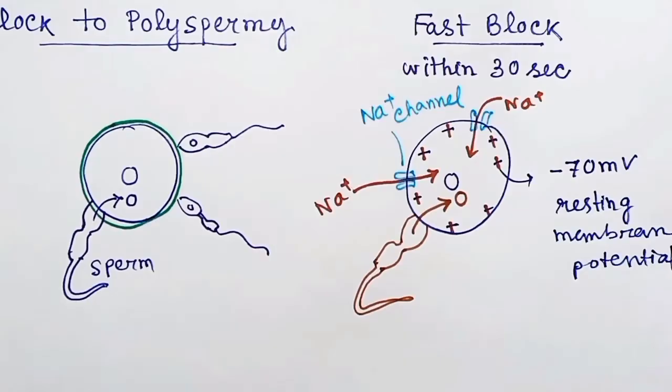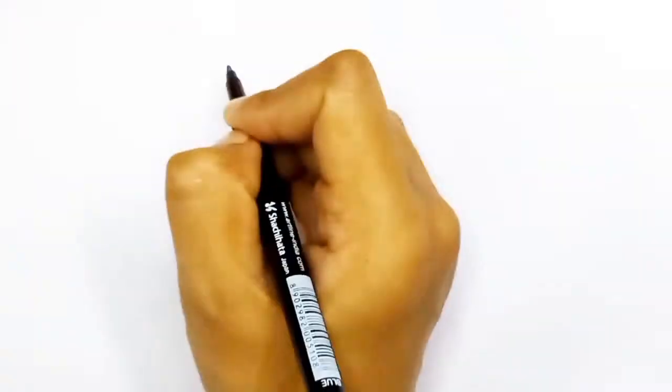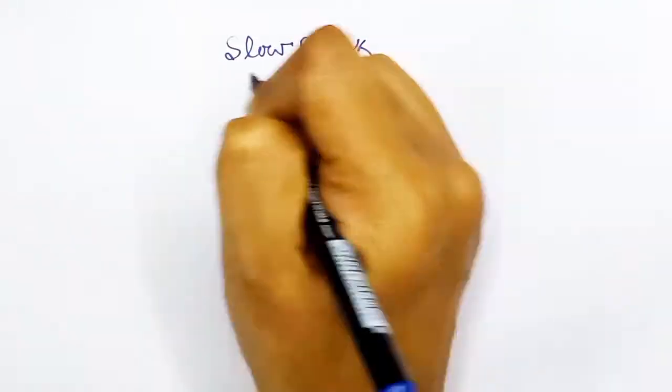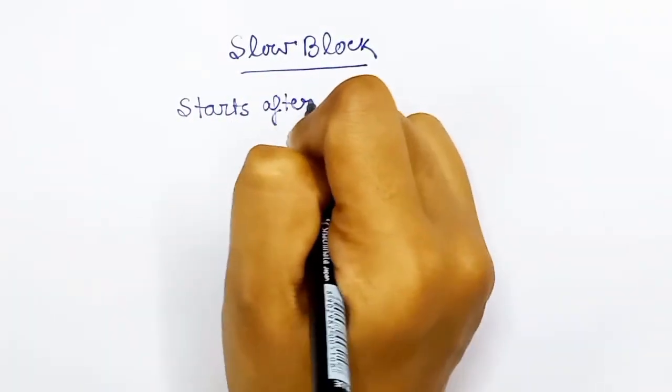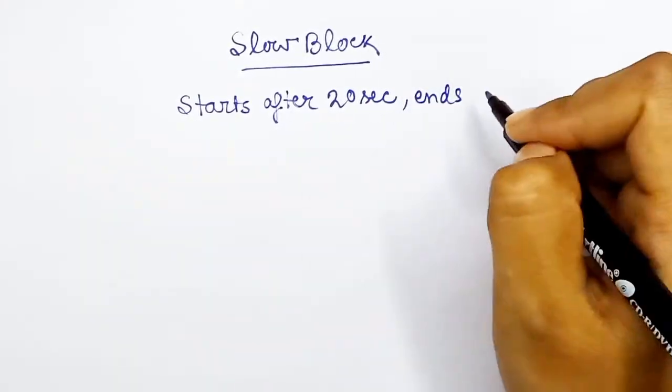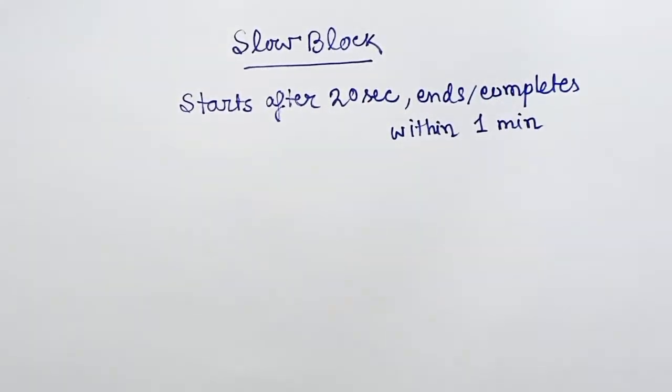But this mechanism cannot prevent sperms for a long time. So there is another mechanism for the prevention of the sperm entry, and that mechanism is called slow block polyspermy.